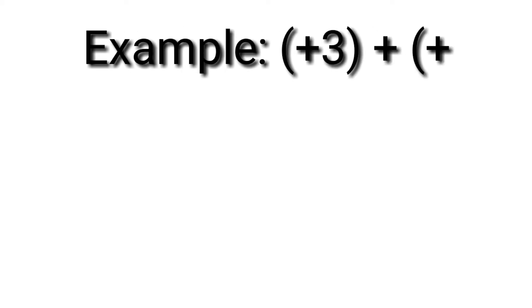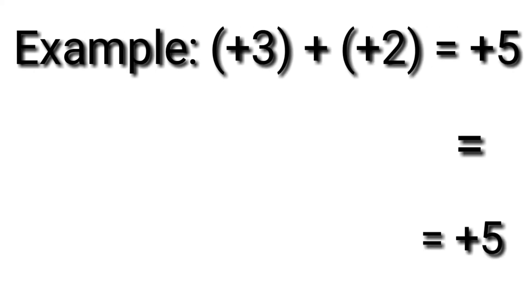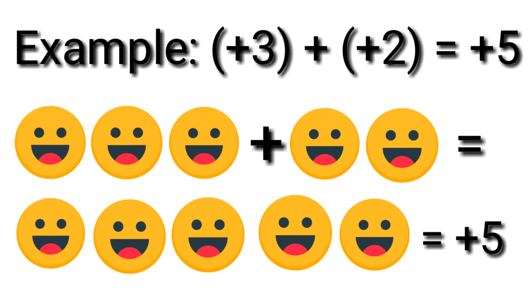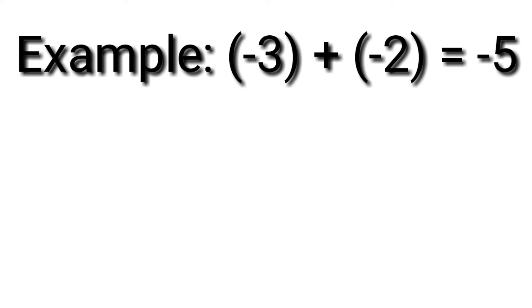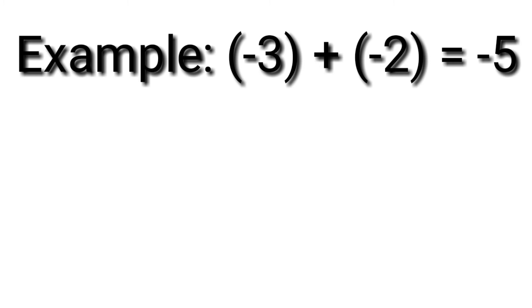Example: positive 3 plus positive 2 is equal to positive 5. Three happy faces added to 2 happy faces is equal to 5 happy faces — positive 5. Example: negative 3 plus negative 2 equals negative 5. Three sad faces added to 2 sad faces is equal to 5 sad faces — negative 5.